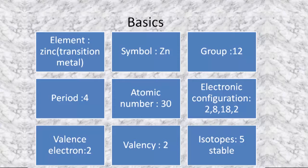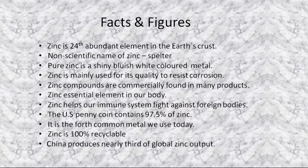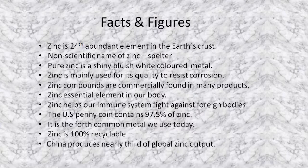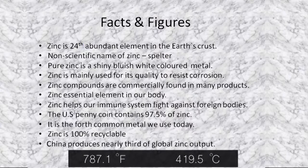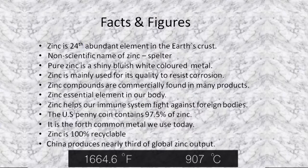Zinc is the 24th most abundant element in the Earth's crust. Its non-scientific name is also called spelter. Pure zinc is a very shiny, bluish-white colored metal, while commercially graded zinc usually has a dull finish. Its melting point is 787.1°F or 419.5°C, and its boiling point is 1664.6°F or 907°C.